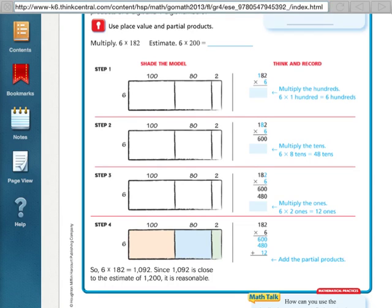Hi everybody, this is Ms. Nelson here again, and we are doing Lesson 2.7 in our 4th grade Florida Go Math book. Lesson 2.7 is about multiplying using partial products.